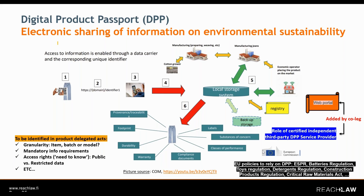We should also keep in mind that the DPP is not only relevant for the EcoDesign for Sustainable Products Regulation, but also many other pieces of EU legislation are relying on the DPP, like the batteries regulation and others. This is a big undertaking for the Commission to put in place generic and systemic requirements for the Digital Product Passport, but many aspects will then also be product-specific, especially as regards information requirements.